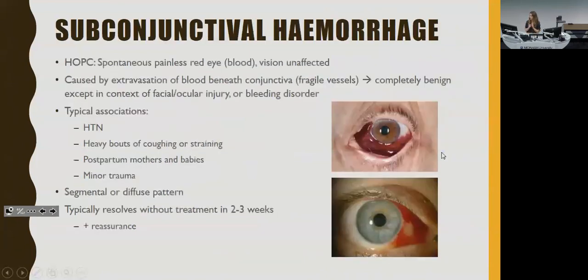Subconjunctival hemorrhage looks scary but is usually benign. Take the patient's blood pressure as it can be associated with hypertension. It may also be associated with increased intra-abdominal pressure — coughing, straining, postpartum — and minor trauma. It usually resolves without treatment; just reassure and check blood pressure.